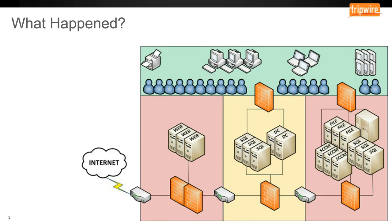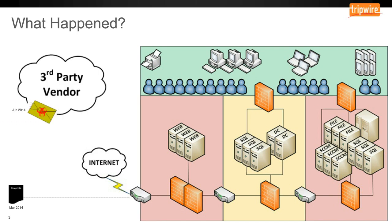Here's a network diagram of the Office of Personnel Management. In March 2014, their network blueprints were stolen from their environment — the attack vector is currently not publicly known. From these network diagrams, attackers were able to profile the environment, see where the vulnerabilities were, how they could pivot across it, and figure out their attack motive. Shortly after, in June 2014, a third-party vendor had a phishing attack against them and their credentials were stolen. With those credentials, the attackers gained access to the environment and started placing malware, likely attacking a desktop system and pivoting up into the server environment.